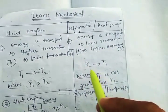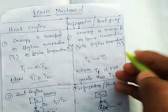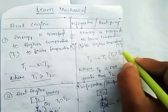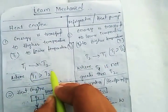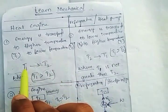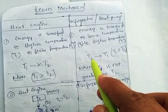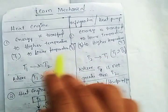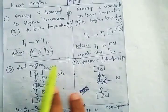In both cases, T1 is greater than T2. In a heat engine, temperature is always brought from the higher temperature to lower temperature, and in refrigeration, energy is always transferred from the lower temperature to higher temperature. This is the major difference between the heat engine and refrigeration.